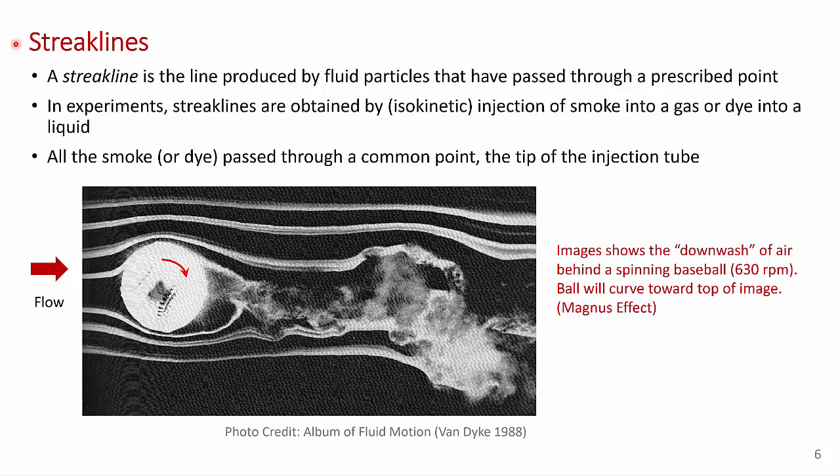Another approach to visualizing flow is the streak line. A streak line is a line produced by fluid particles that have passed through a prescribed point. Now, personally, I don't find that definition very helpful. A better way to think of streak lines is in terms of an experimental setup. In experiments, streak lines are obtained by the injection of smoke in a gas or dye in a liquid into the flow. And I've used the word isokinetic here. What I mean by that is that we inject or we should try to inject the smoke or gas into the flow at the same velocity as the flow. So we don't disturb the flow that we're trying to study.